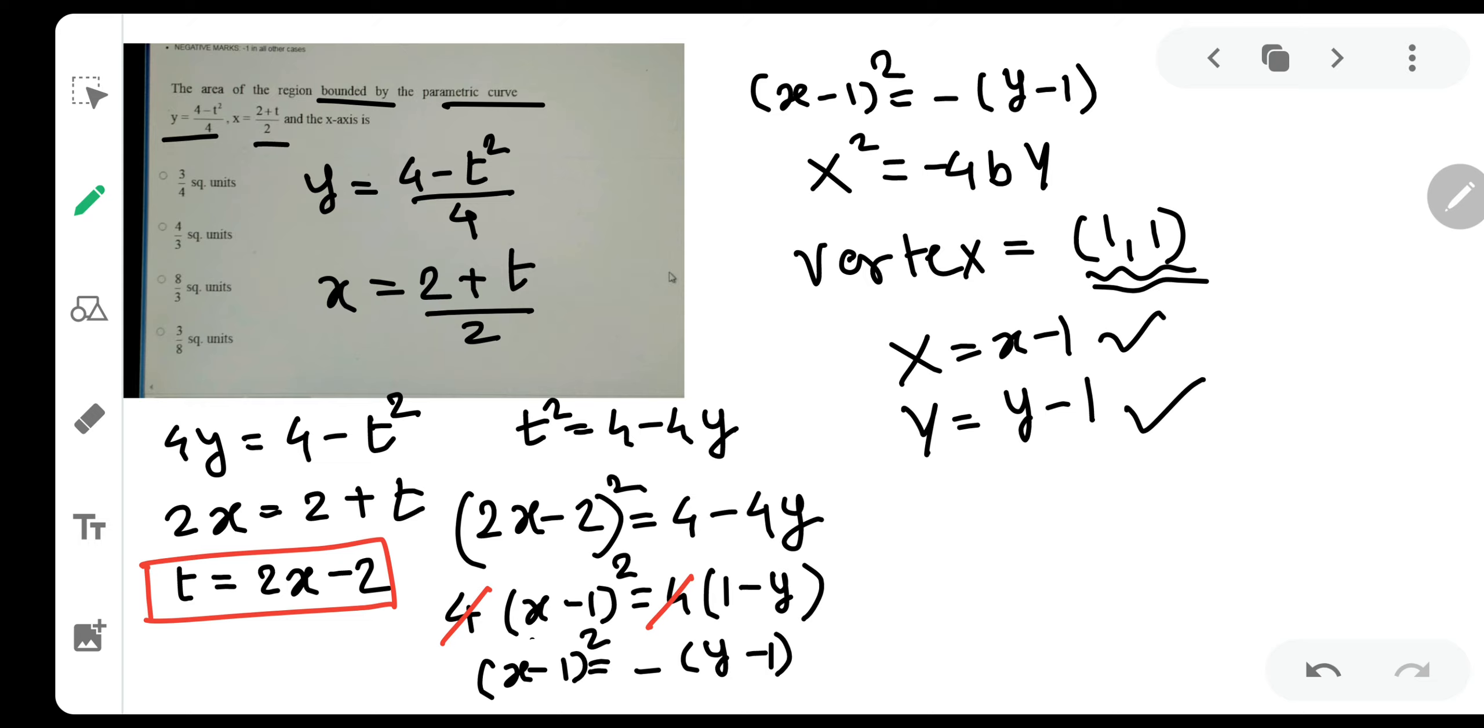Now we need to also check that when the value of x is 0 and when the value of y is 0. And I can directly see that this curve is passing through origin. So let me do that when x is 0 and when y is 0. Let me rewrite the curve properly over here. x minus 1 the whole square is equal to minus times of y minus 1.